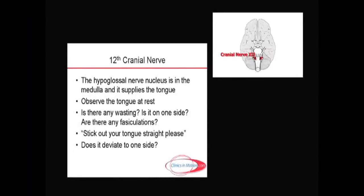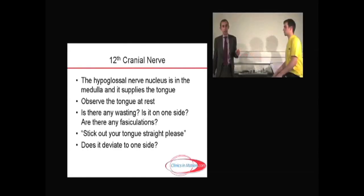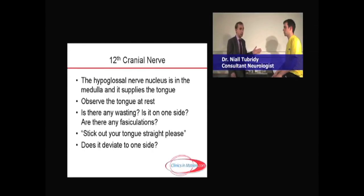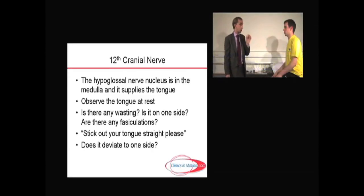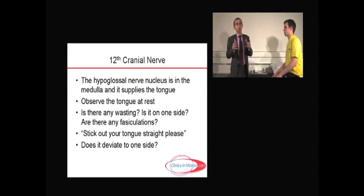The 12th cranial nerve is the hypoglossal nerve. Its nucleus, as we stated in earlier parts of this demonstration, is in the medulla or bulb of the brain stem. It is the nerve supply to the tongue. So it's straightforward enough, but remember that the tongue is a muscle — therefore it must be observed at rest, you must look for wasting, fasciculations, look at its movement, and even test its power.